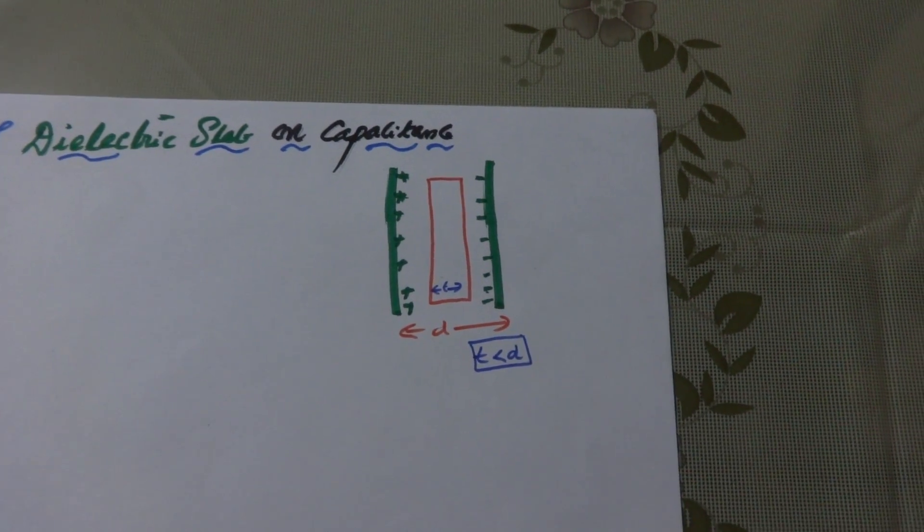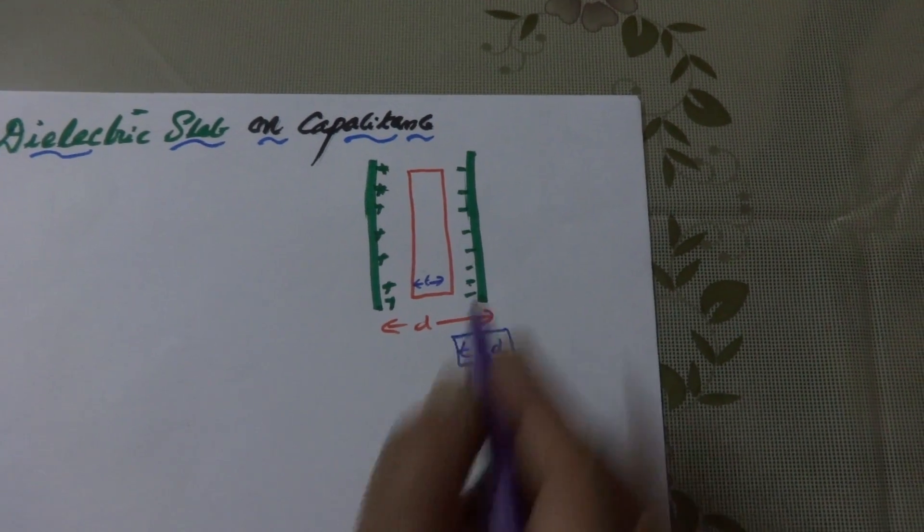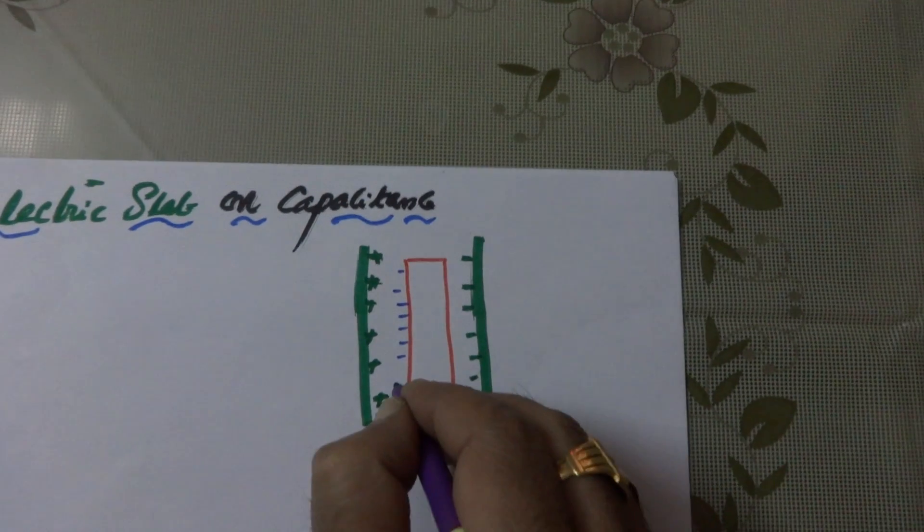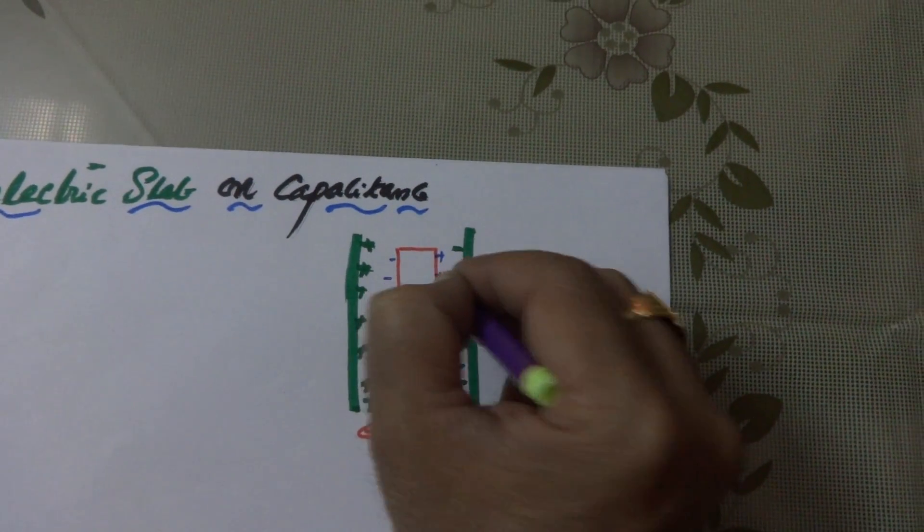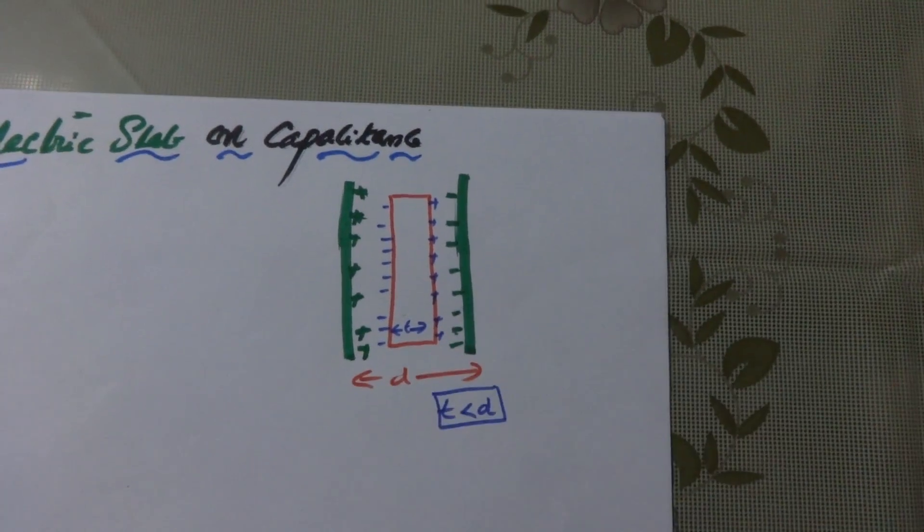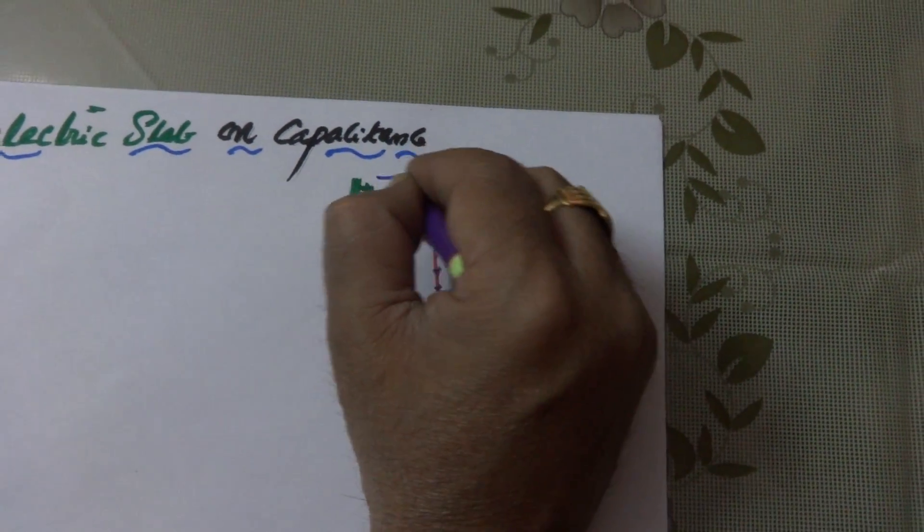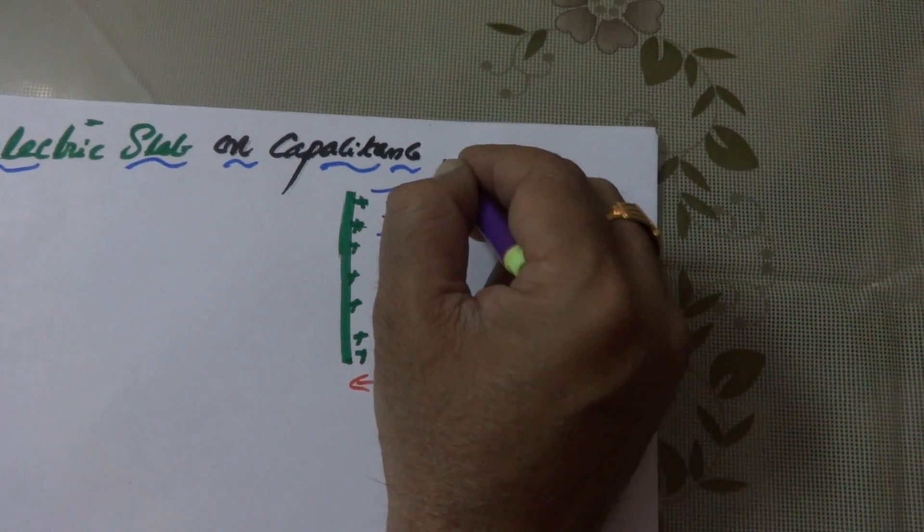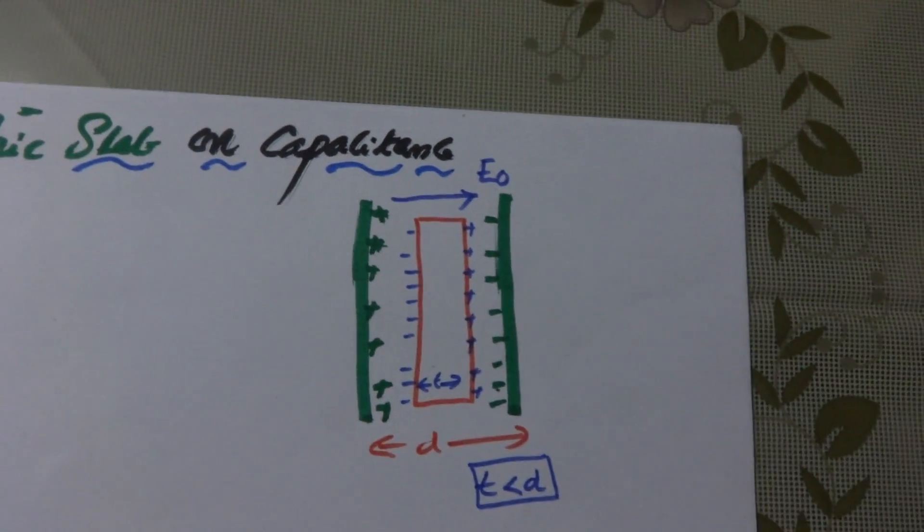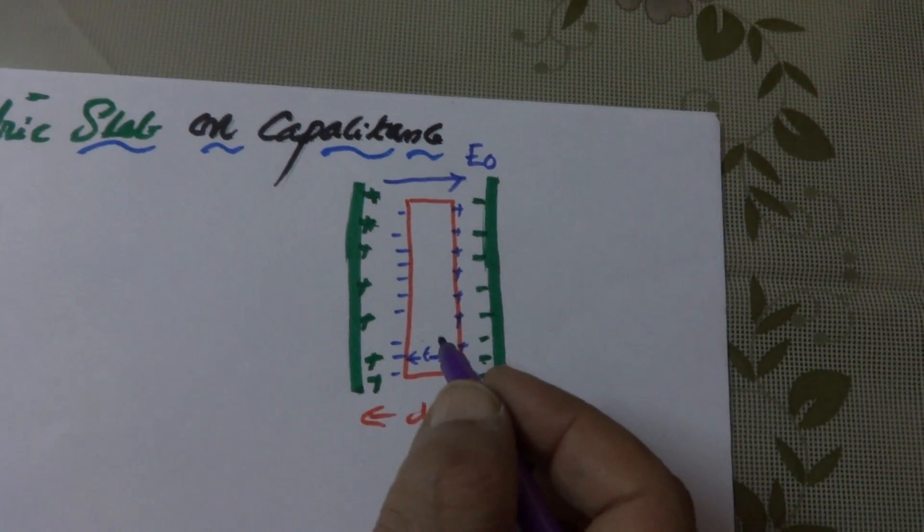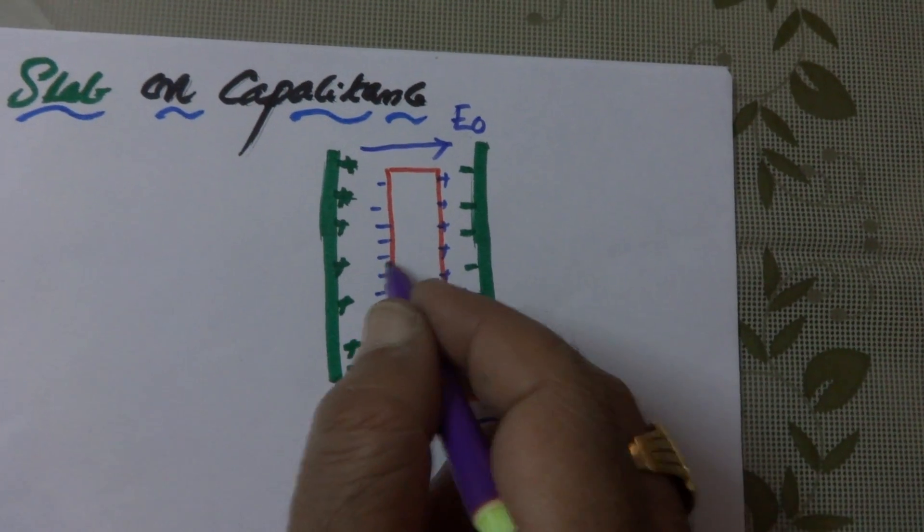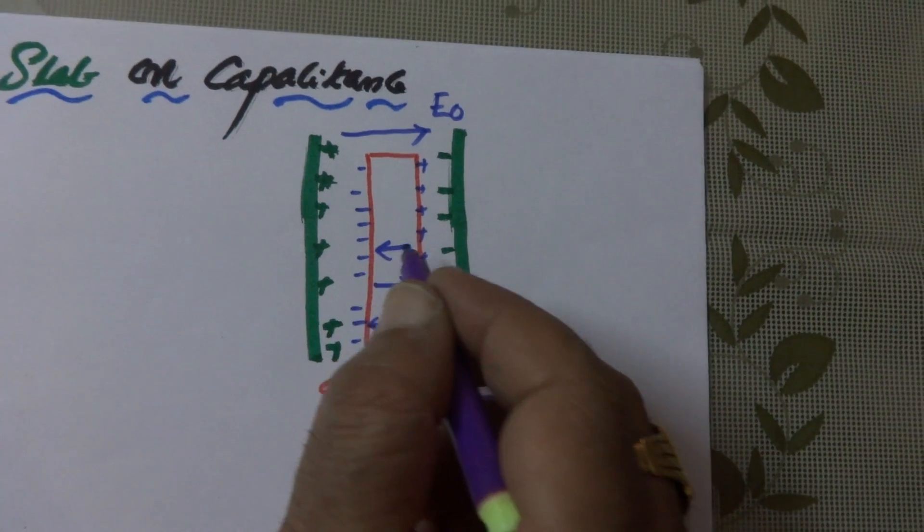When we introduce the dielectric slab in between the parallel plate capacitor, an opposite and equal charge is induced in the dielectric. When there is no dielectric, the field is E0. Within the dielectric, the E0 will be in this direction. Because of this polarization, Ep will be in this direction.